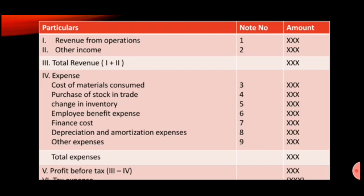Roman numeral IV: Expenses. The expense items are: cost of materials consumed — Note number 3; purchase of stock in trade — Note number 4; change in inventory — Note number 5 (this can be a negative figure); employee benefit expenses — Note number 6, which includes salary and wages.